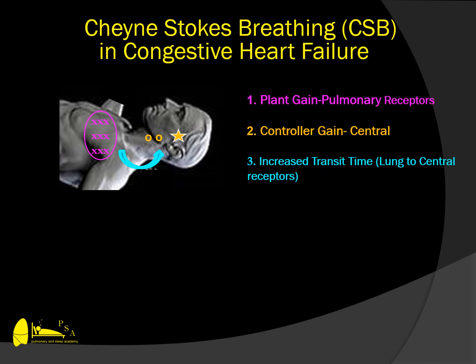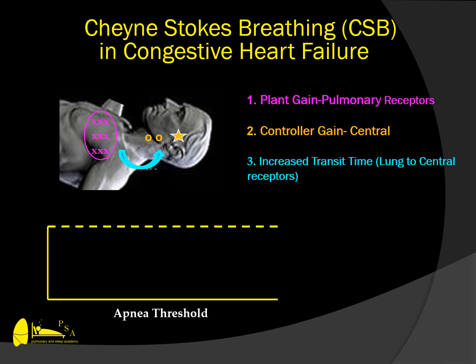The medulla is seeing a PCO2 signal reflecting what the lung did 20 or 25 seconds ago. In the initial part of this, the PCO2 may initially be 40 and then, based on hyperventilation, that PCO2 is driven down to the apnea threshold. The medulla then will not have any signal to breathe for the next 10 seconds, and while below the apnea threshold, there will be a central apnea.